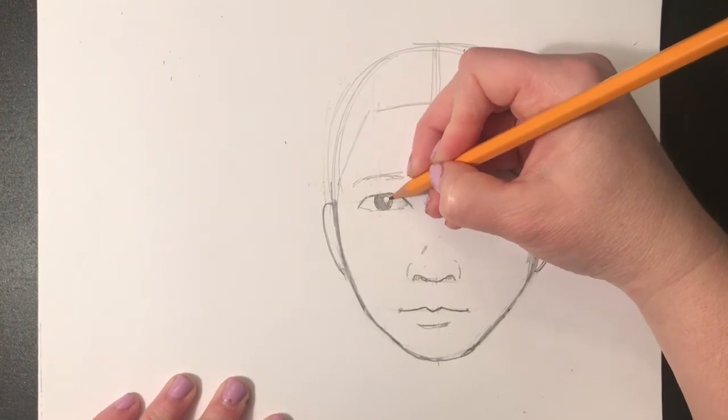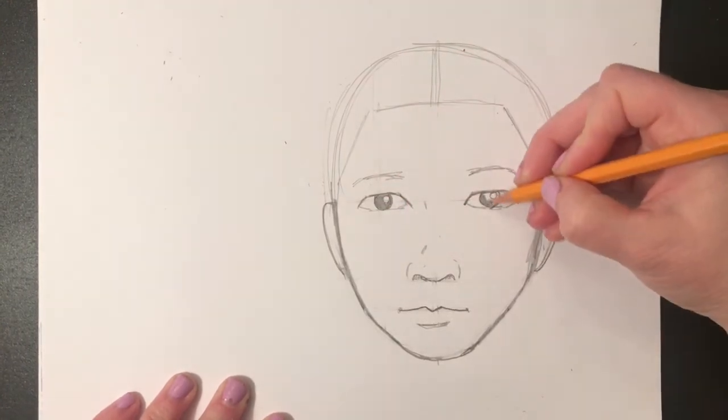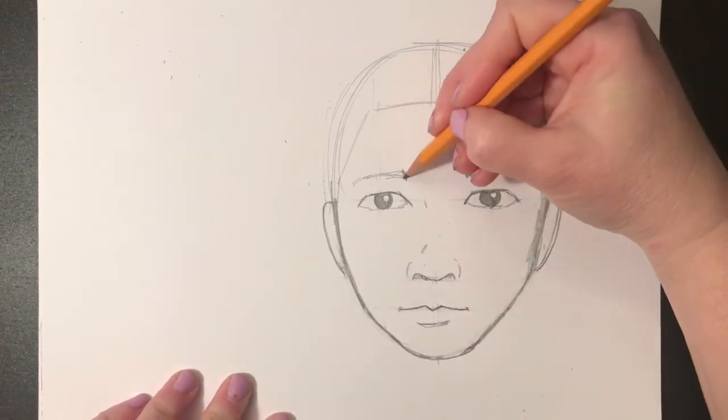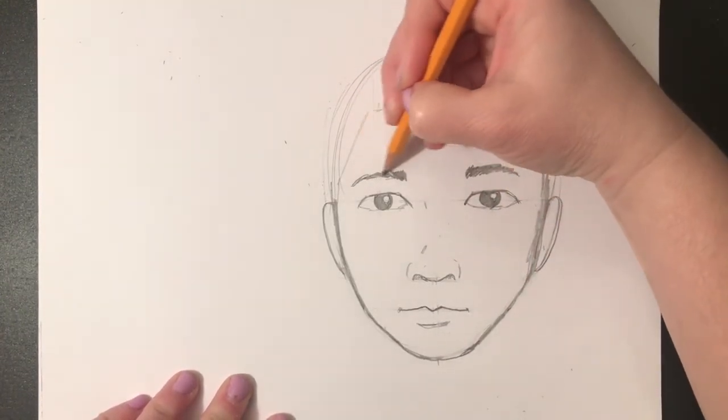Here I added a little white area that helps show that the eyes are shiny—it's called a highlight. Again, these are really simplified eyes, and I'm going to show you how to make more detailed ones later.